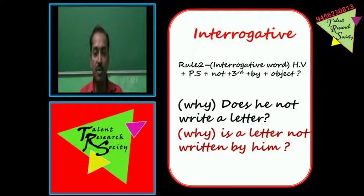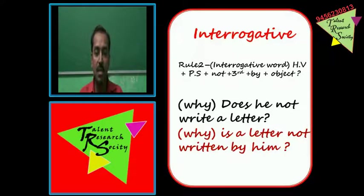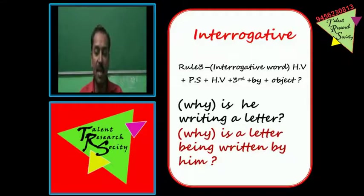Rule 2: Interrogative word + helping word + passive subject + not + third form + by + object. Example: 'Does he not write a letter?' — interrogative mein negative. Passive banayenge: 'does' ki jagah helping word 'is', object 'a letter' pehle aayega. Sentence: 'Why is a letter not written by him?'